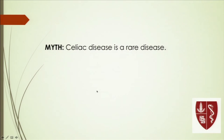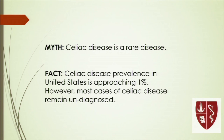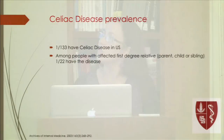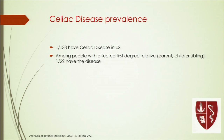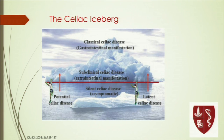One common myth is that celiac disease is rare. In fact, the prevalence is approaching about 1% in the United States — about 1 in 133 individuals. Among first-degree relatives of those with celiac disease, that risk rises to about 1 in 22. Despite improved diagnostic tests and awareness, we are still only seeing the tip of the iceberg, and most cases probably remain undiagnosed.